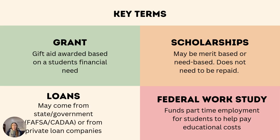Here are the four categories of financial aid that students may receive. Grants are considered gift aid awarded based on a student's financial need. Scholarships may either be merit or need-based and also do not need to be repaid. Loans may come from the state or government through the FAFSA, California Dream Act, or private loan companies. And federal work study is need-based, comes from the FAFSA or California Dream Act, and funds part-time employment for students to help pay for their educational expenses.